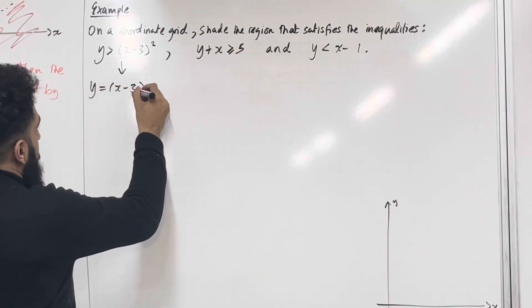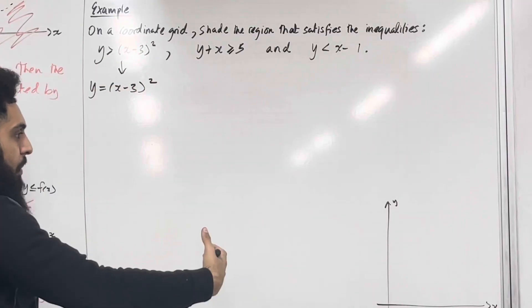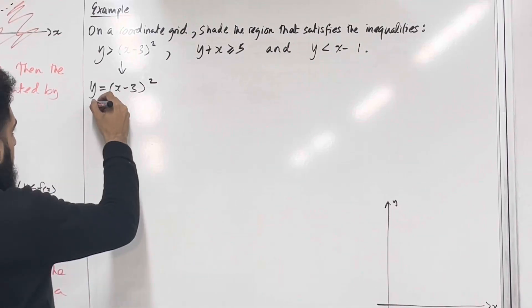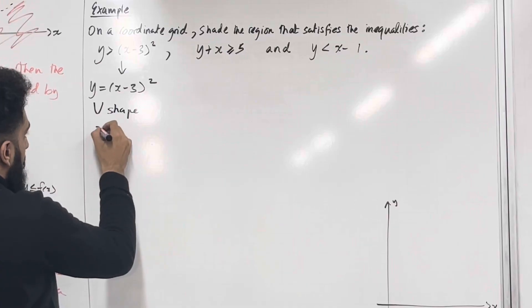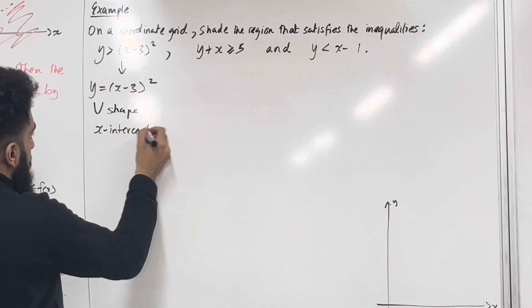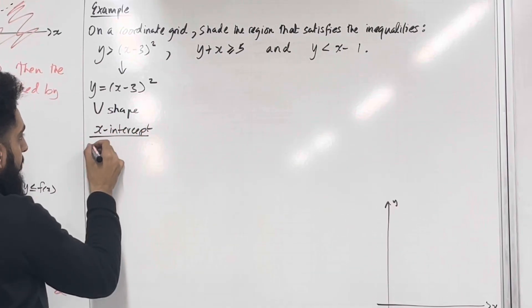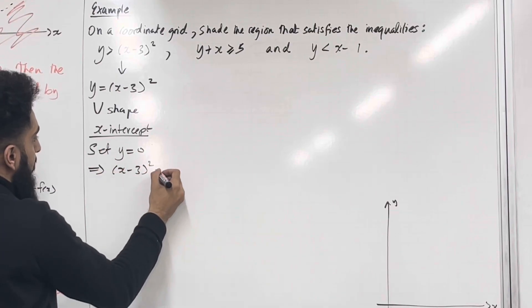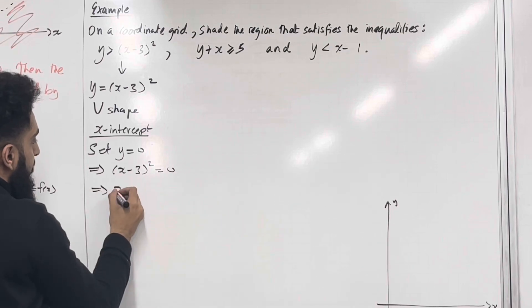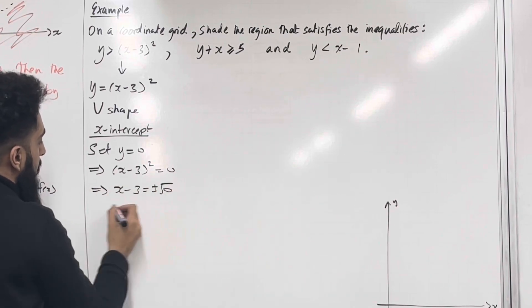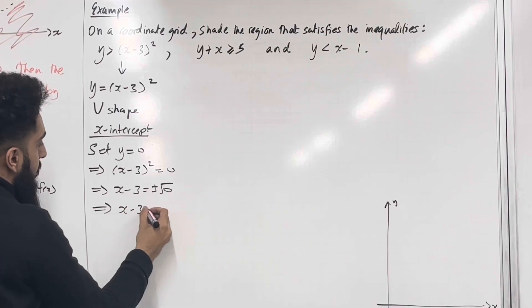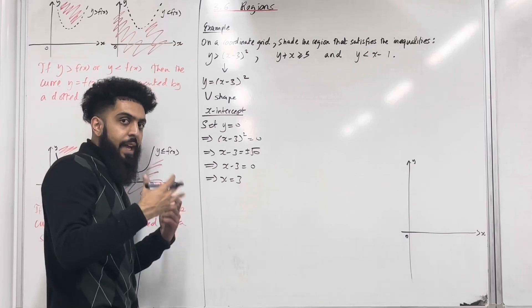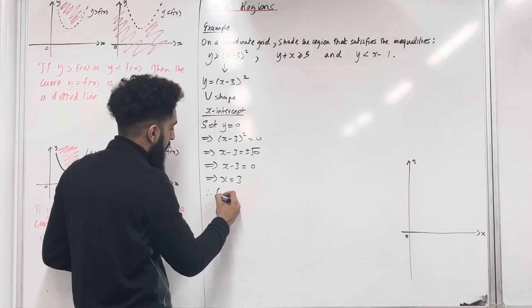Let's have a look at the first inequality. y is equal to x minus 3 in bracket squared. If I expand this double bracket, the coefficient of x squared will be positive 1, so the shape of the graph will be a U-shape. To find the x-intercept, I need to set y equal to 0. This implies that x minus 3 squared is equal to 0, which implies x minus 3 equals 0, hence x is equal to 3. So the x-intercept will be 3, 0.